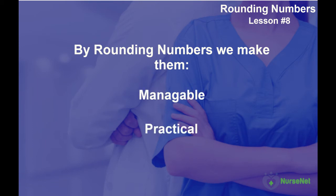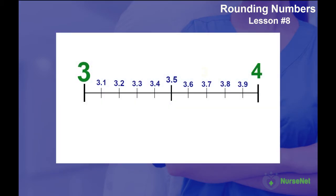So let's look at how we round numbers. Here is a number line with the unit 3 on the left-hand side and the unit 4 on the right-hand side, with tenth digits in between. Now let's consider all the tenths that are closer to the 3 than they are to the 4. They include 3.1, 3.2, 3.3 and 3.4. So if you have any of those numbers, and we want to round to the nearest whole number, we would round down to 3.